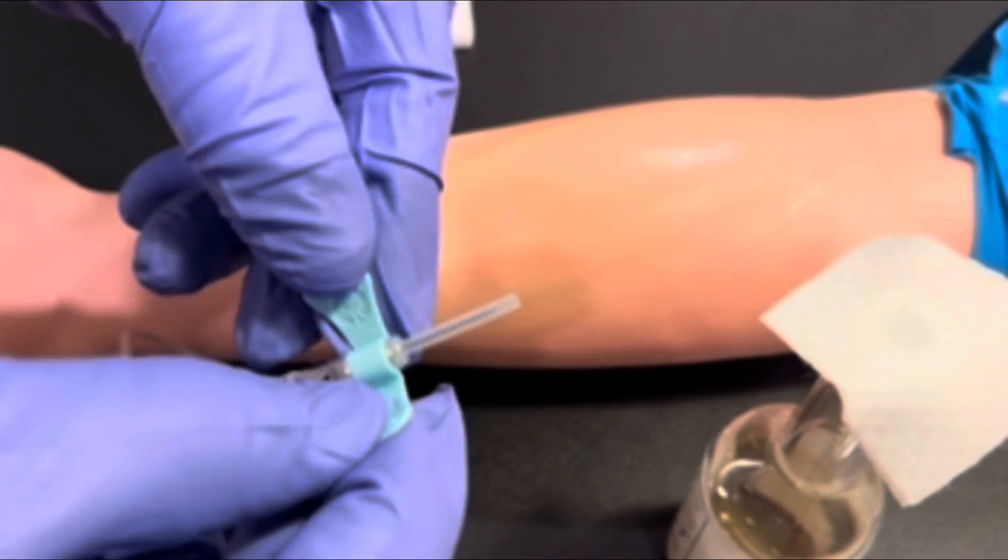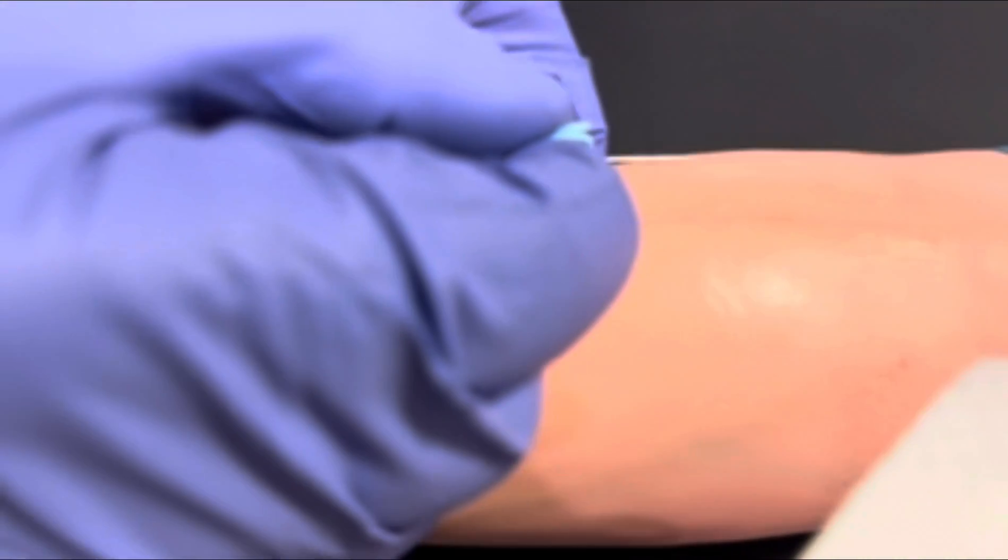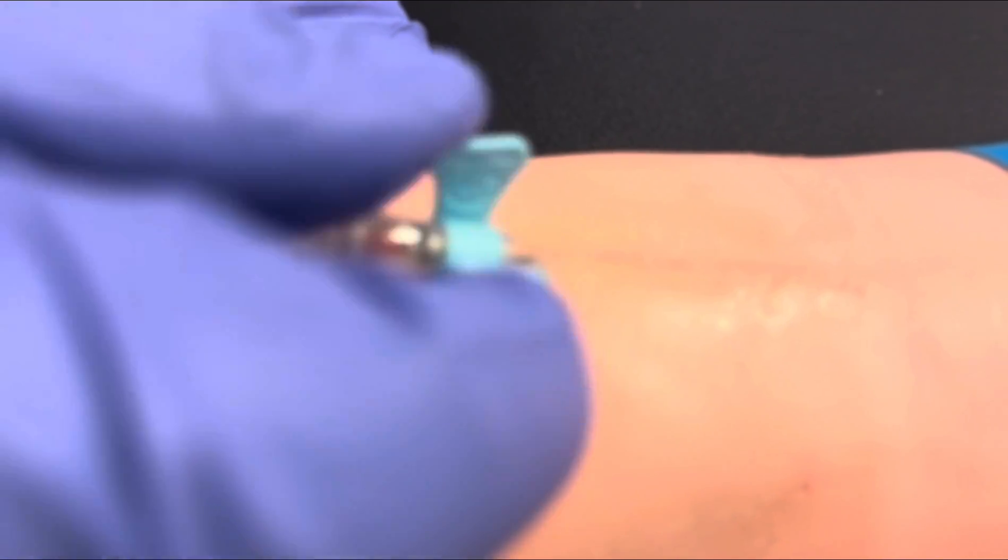Reapply your tourniquet. Prepare for the venipuncture procedure. Insert the needle at a 5 to 10 degree angle of insertion.